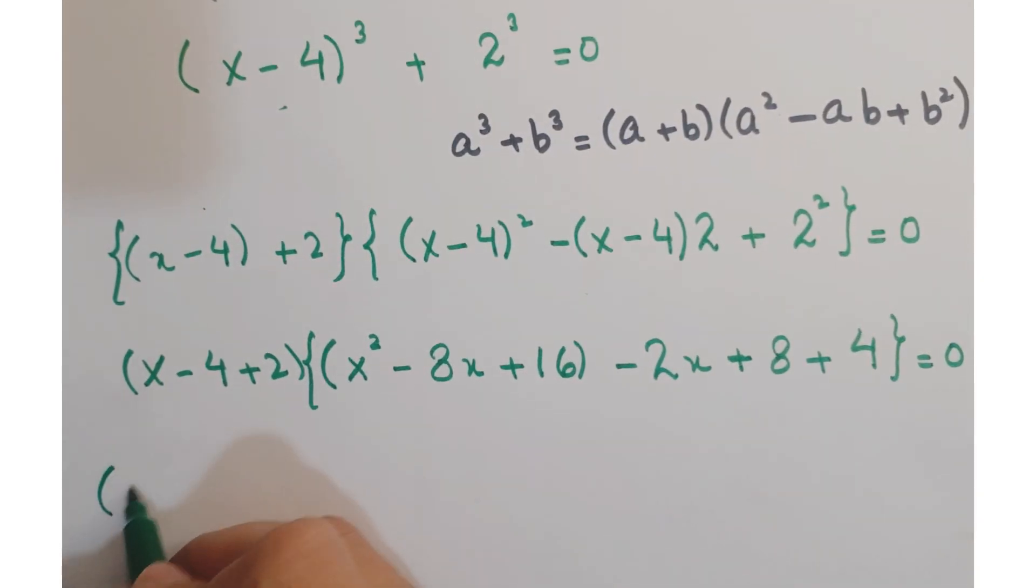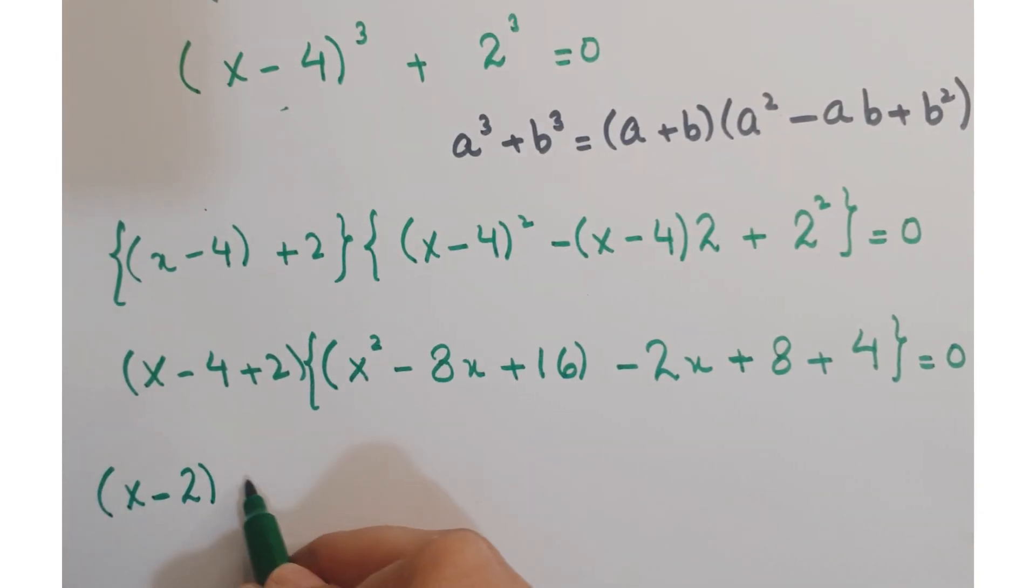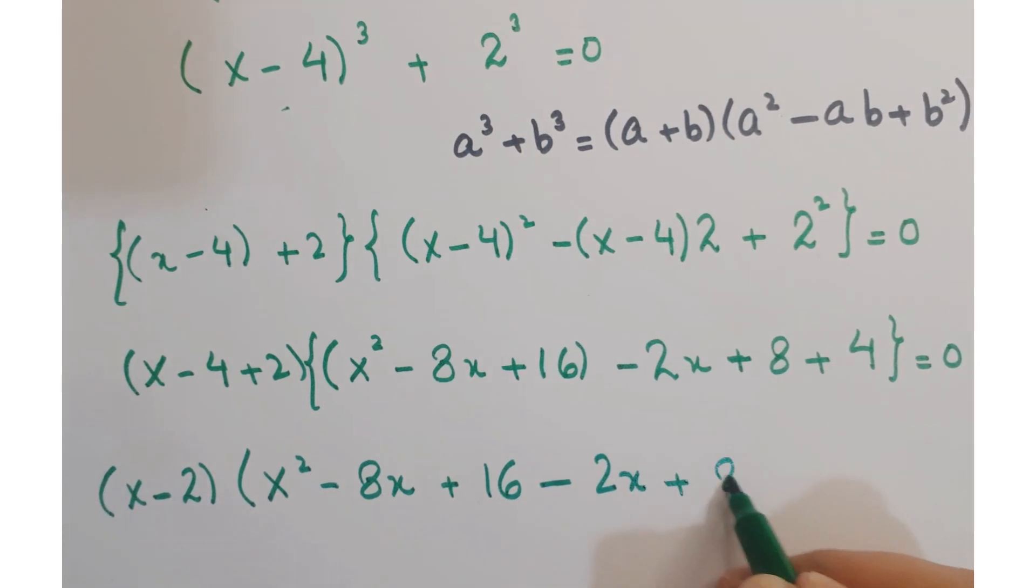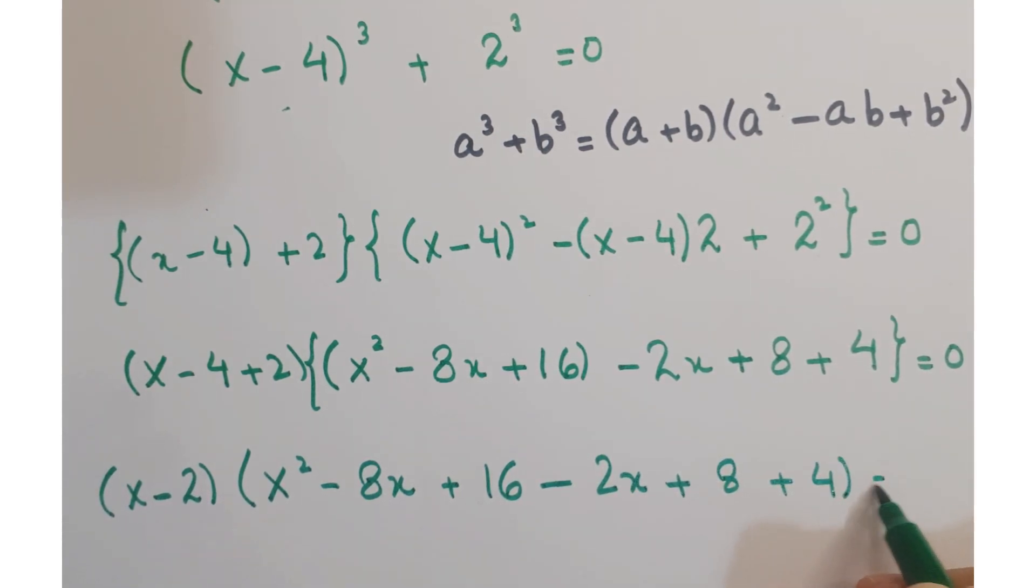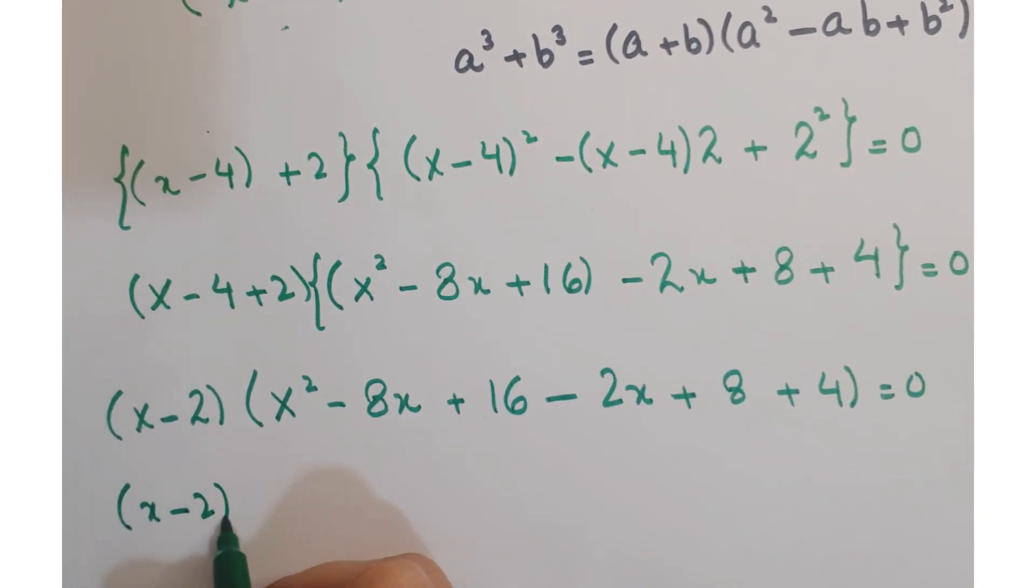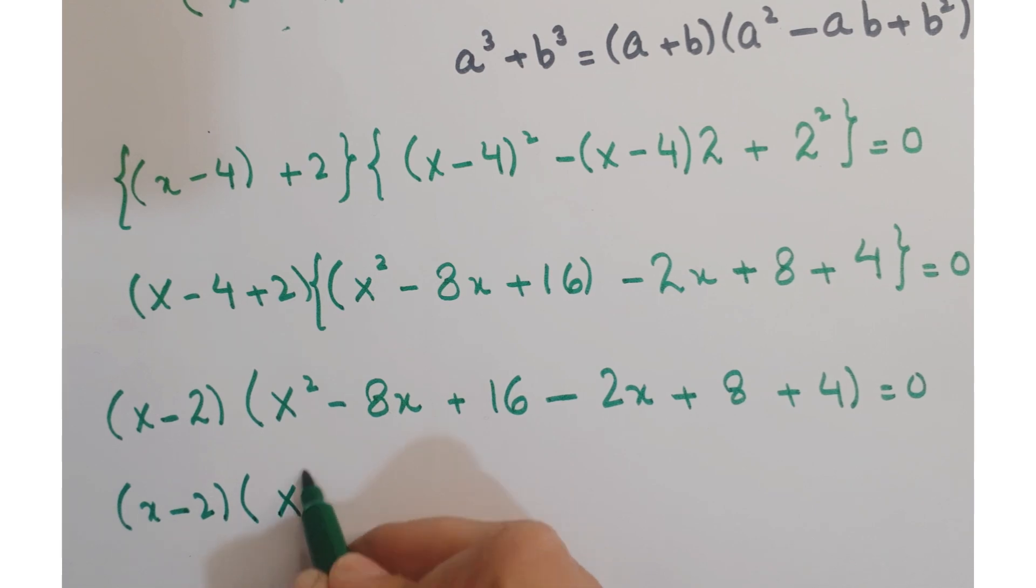You can simplify it as x minus 2 into x square minus 8x plus 16 minus 2x plus 8 plus 4 equals 0. Here we have a quadratic term that is x square.